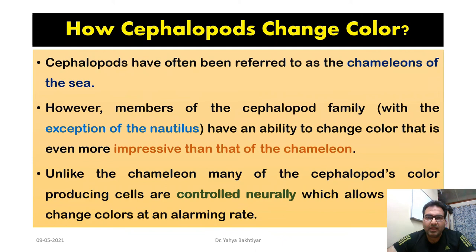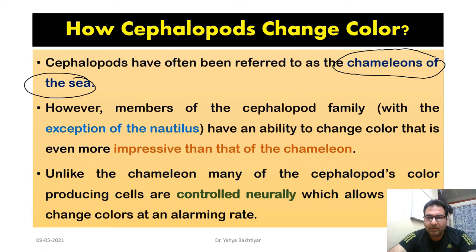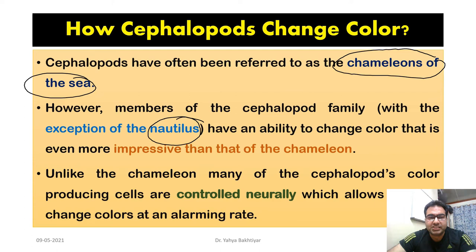Cephalopods have often been referred to as the chameleons of the sea because of their remarkable ability to change color. However, among cephalopods, the nautilus is an exception — it lacks the ability to camouflage or change color. The others have an ability to change color that is even more impressive than that of the chameleon. Unlike chameleons, many cephalopods have neurally controlled color-producing cells that allow them to change colors at an alarming rate.